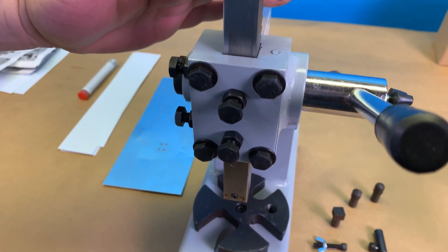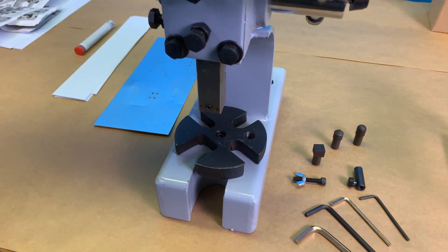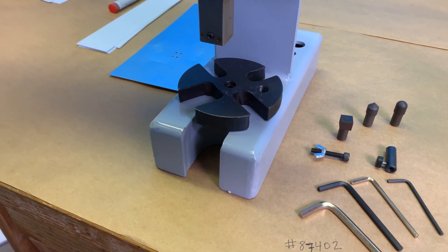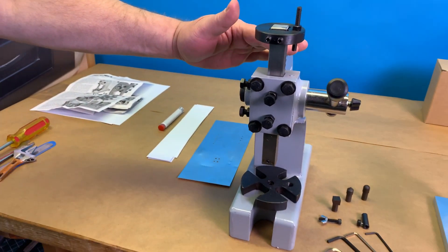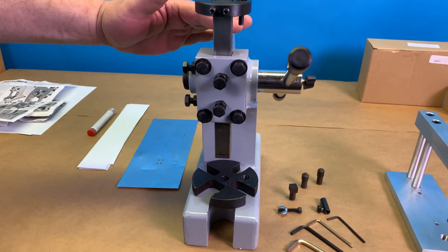The 87402, our half ton arbor press, is a unique tool and exclusive to us. No other arbor press available today comes with the capability and features that this tool provides straight out of the box.